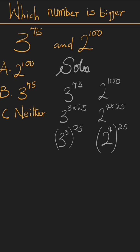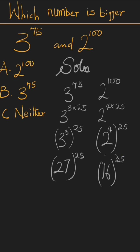Since the external powers are the same, we work the inside. 3 raised to the power of 3 is 3 times 3 which is 9, times 3 which is 27 — giving us 27 raised to the power of 25. And 2 raised to the power of 4 is 2 times 2 times 2 times 2, which gives us 16 raised to the power of 25.